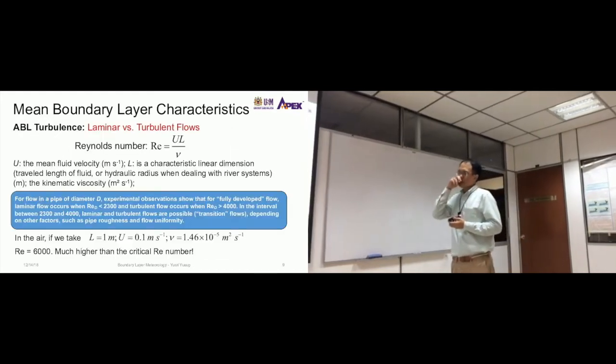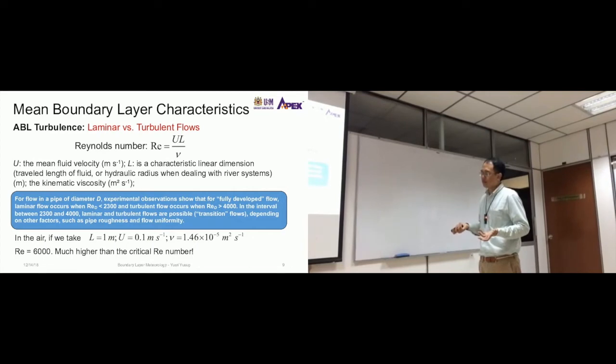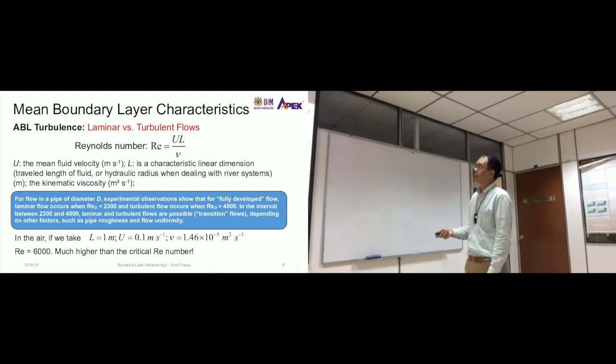Now we go a bit into the mathematics of this, but this is something that you might have been exposed to - this concept of laminar and turbulent flows. So let's try to calculate the Reynolds number, a value that can describe whether the flow in the atmosphere is laminar or turbulent.